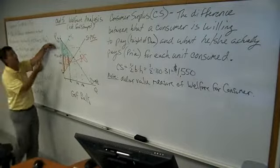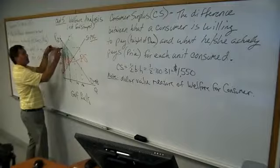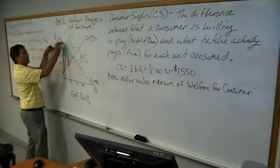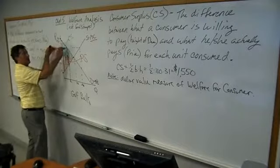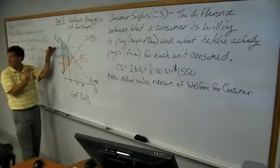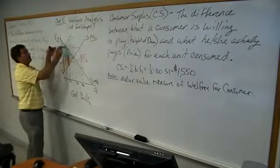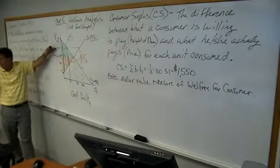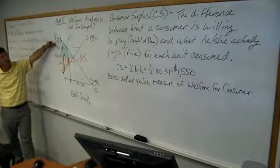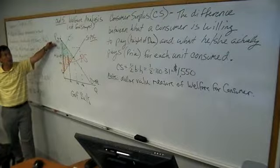His consumer surplus is 15. Willing to pay minus actual price. You should visually see that triangle start to reveal itself. There's the new consumer surplus. If we were out of whack, that would be the consumer surplus.